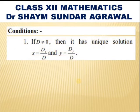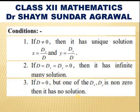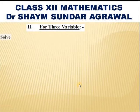First we calculate D. If D is not equal to 0, then we can say it has a unique solution and x = Dx/D and y = Dy/D. If D = Dx = Dy = 0, then it has infinitely many solutions. And if D is 0 but one or both of Dx or Dy is non-zero, then it has no solution. Remember these three conditions.